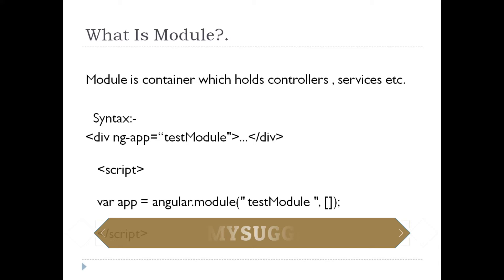For the time being, I will be showing you how to define a module and how to define a controller within the module. For creating a module, you have to use angular.module. The name of the module I want to create is TestModule. The second parameter is kept empty — meaning I am not depending on any extra plugins. We will be learning about extra plugins in upcoming programs.